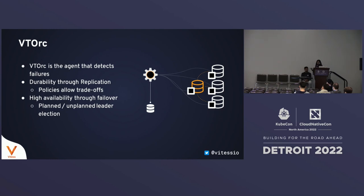High availability is achieved through failover. When a failure is detected, we call it an unplanned leader election. But in normal operations — upgrading software or hardware — you want planned failovers so the system remains available through maintenance operations. That's Vitess's general strategy for high availability, and VTOrc is the agent that enables those things.